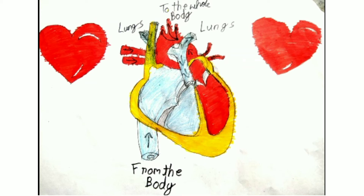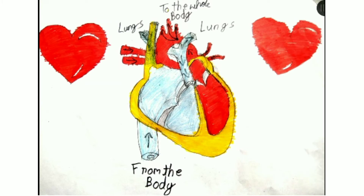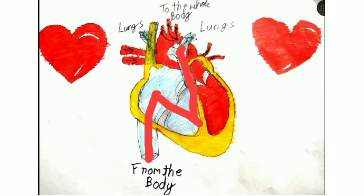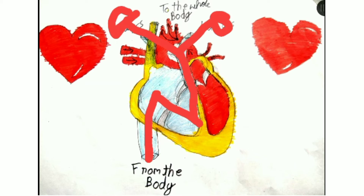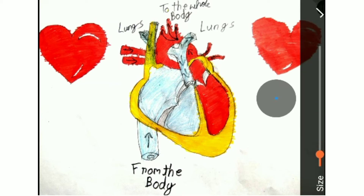Let's revise now. The deoxygenated blood comes, goes through the valve, goes through the aorta into the different lungs. Then the lungs mix it with the oxygen in the lungs. Comes back with these tiny arteries.